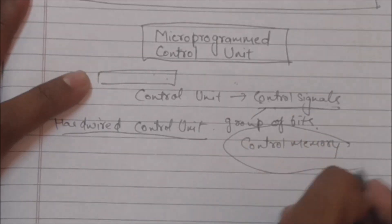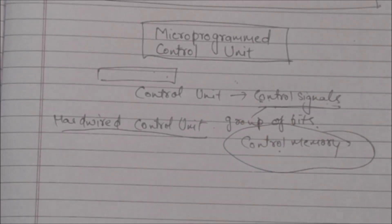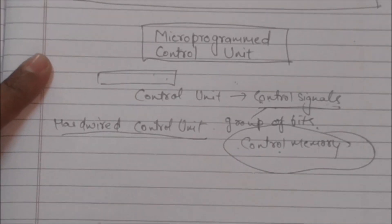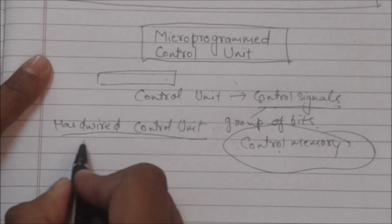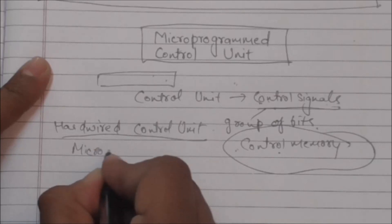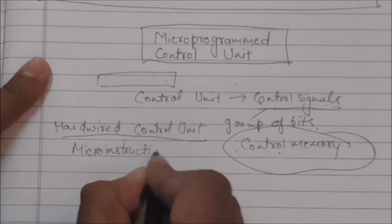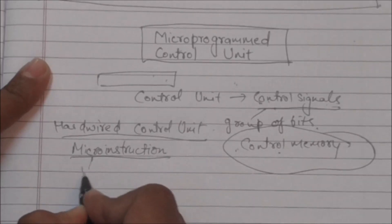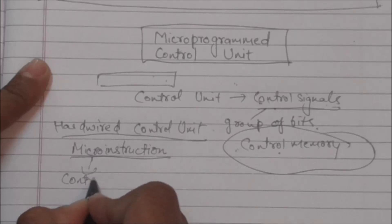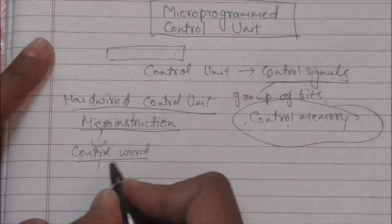In case of a micro-programmed control unit, the control information is stored in a memory which is called control memory. Each word of a control memory contains a micro-instruction, and this micro-instruction contains a control word which specifies one or more micro-operations.